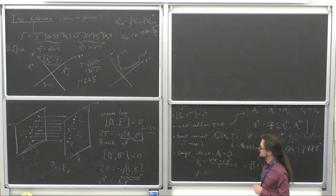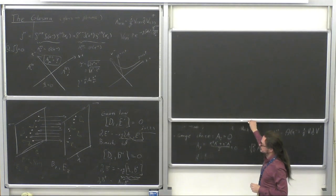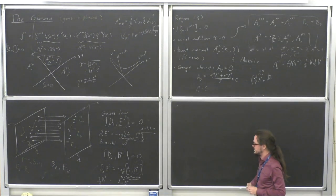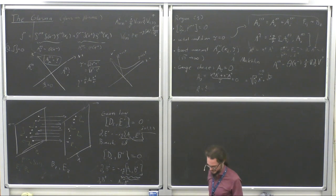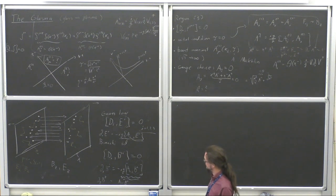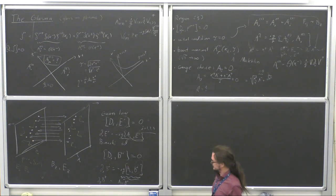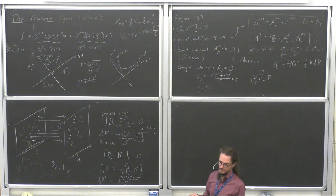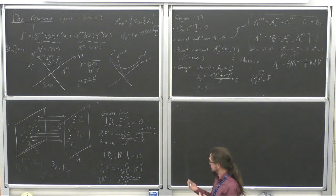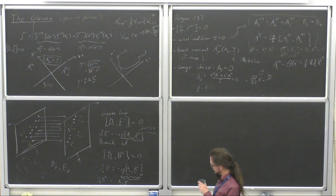So these are the glasma fields. And then of course this sets up a lot of speculation about exotic effects. One thing that you notice is that B_z and E_z are both in the z direction, so on average there's a Chern-Simons charge in this field configuration. Of course it fluctuates; there's no net Chern-Simons charge, but there is a Chern-Simons charge. Though of course you could get similar fluctuating Chern-Simons charge from any random field configuration, so it's not entirely clear what the implication is.